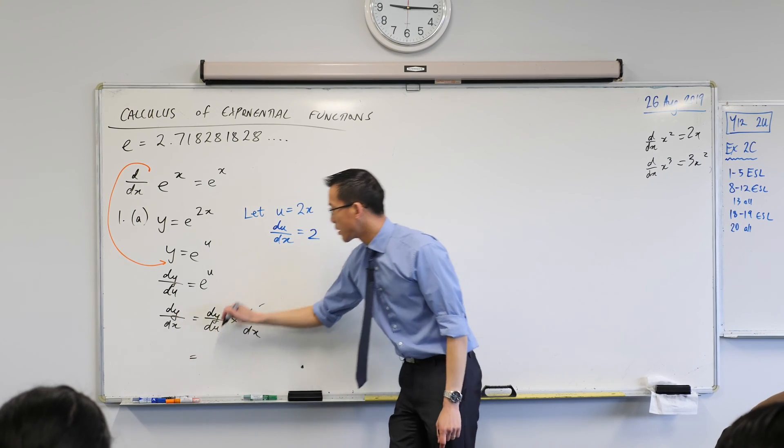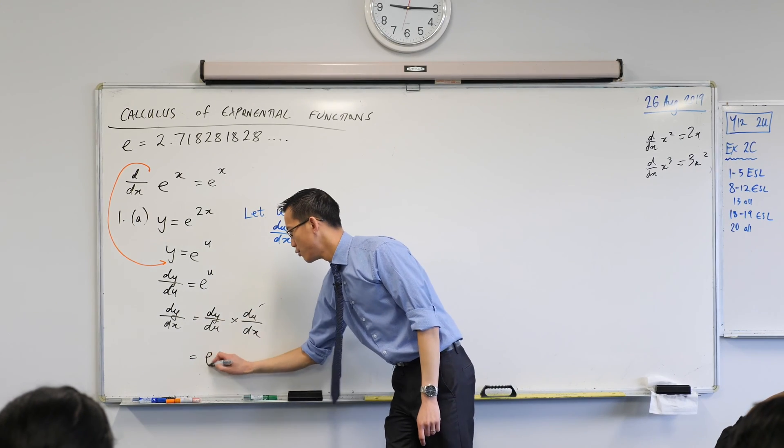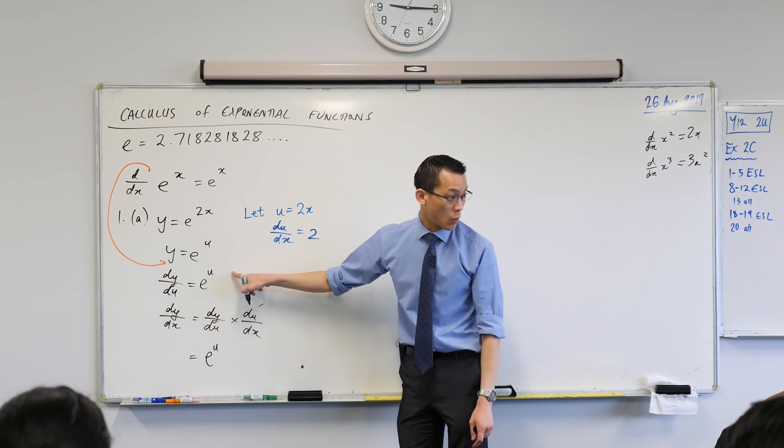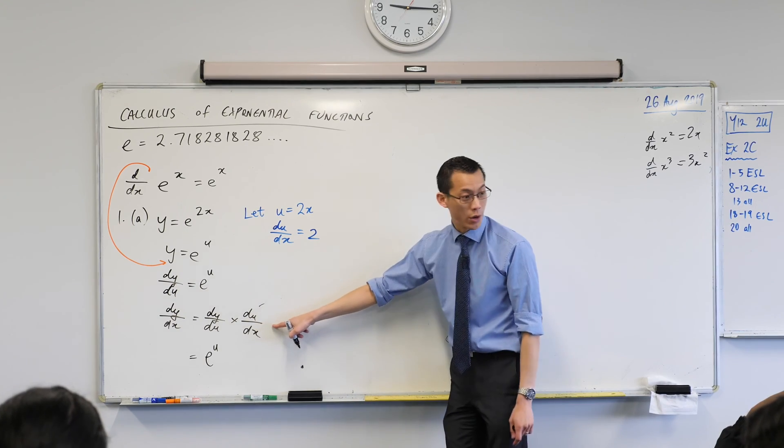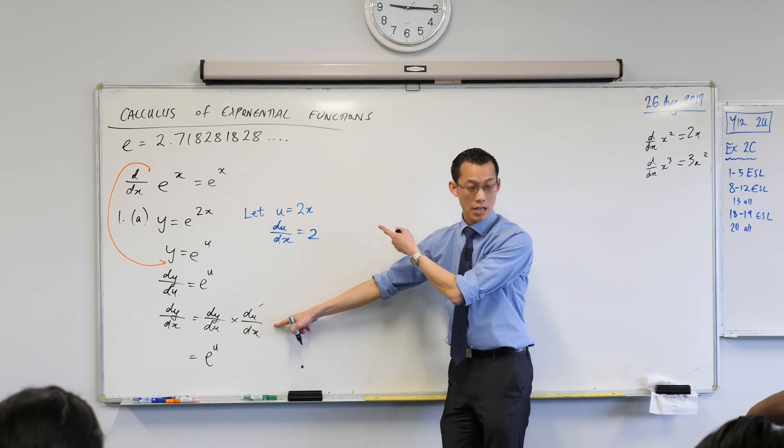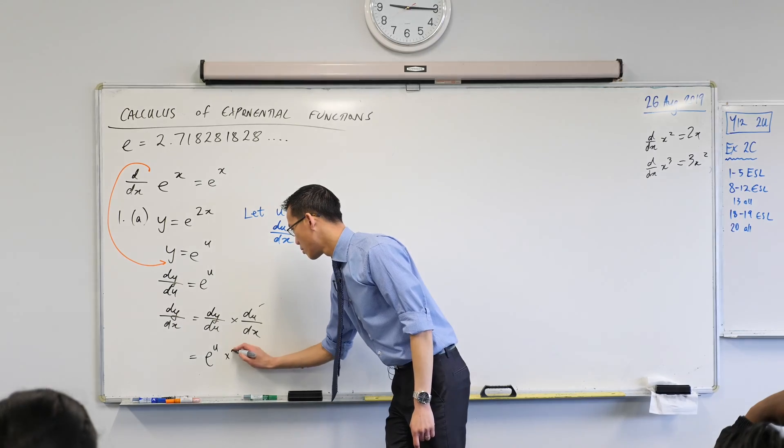But, I'm going to say it's e to the power of u. That's what I worked out. Just one line before. And, what's this guy? I worked it out over here. It's just two.